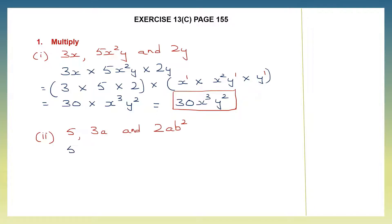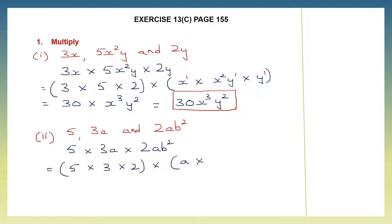Here we multiply 5 into 3a into 2ab squared. Let's multiply all the numerical coefficients: 5 into 3 into 2, and we multiply the literal coefficients. We write ab squared only. Now let's multiply: 5 threes are 15 and 15 twos are 30, into a into ab squared. I have 1a here and 1a there, so a into a will be a squared because we add up the powers. 1 plus 1 becomes 2.